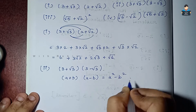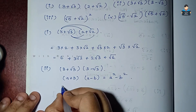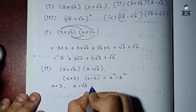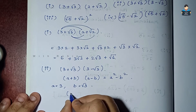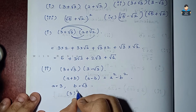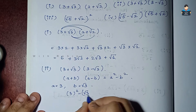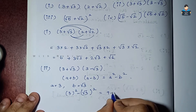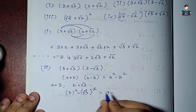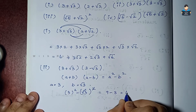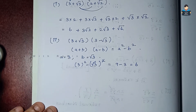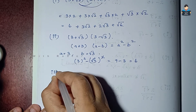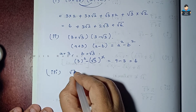Second subdivision uses the identity a² minus b². Here a is 3 and b is √3, so we get 3² minus (√3)², which equals 9 minus 3, giving the answer 6.